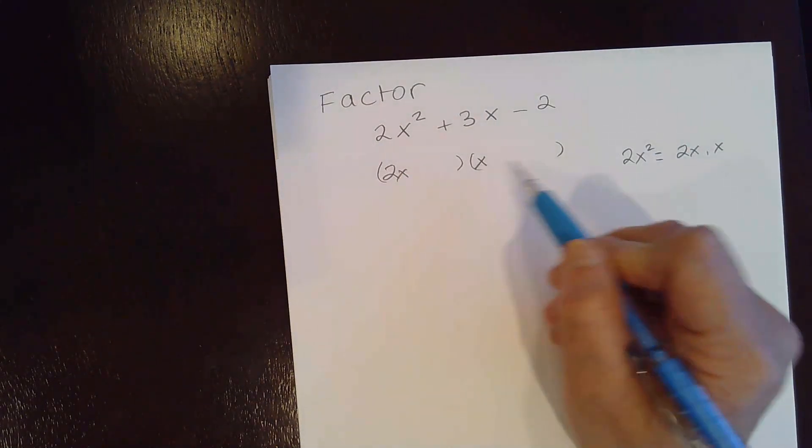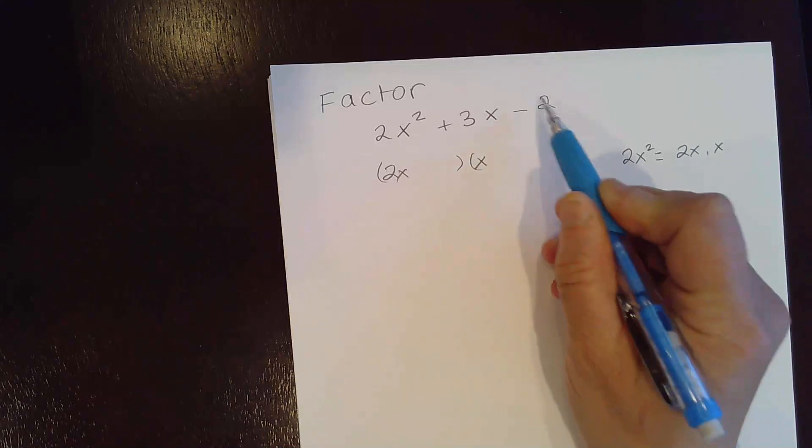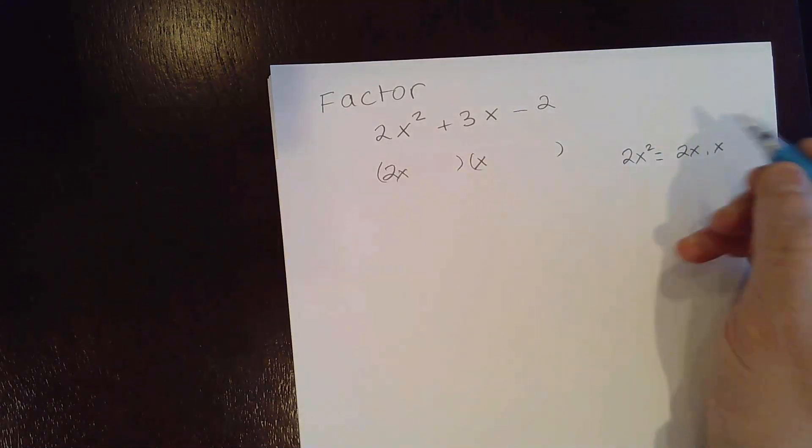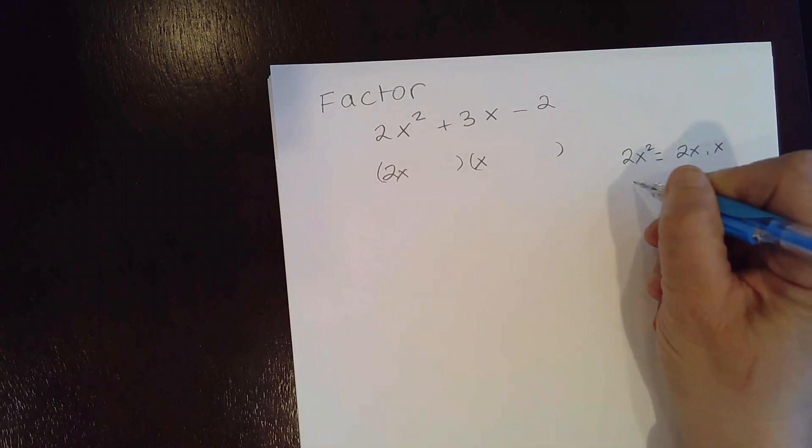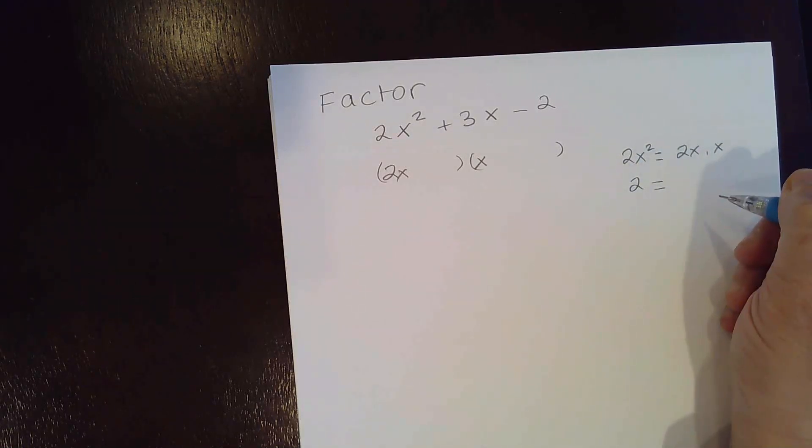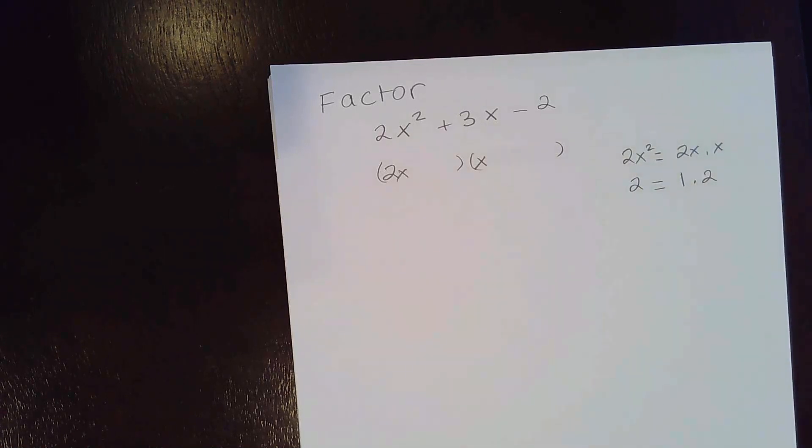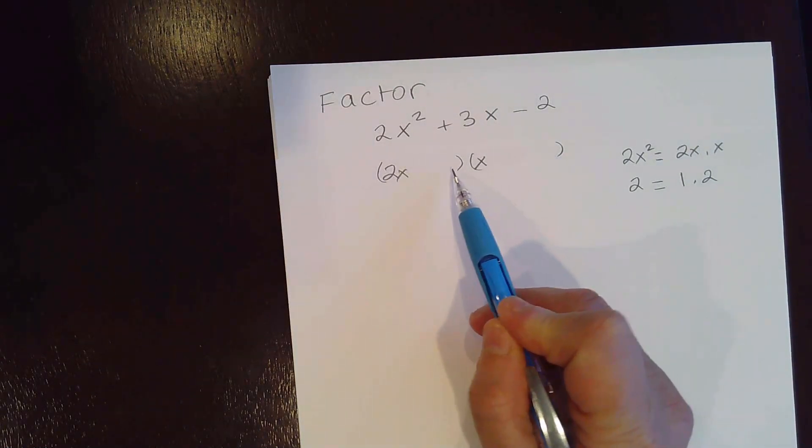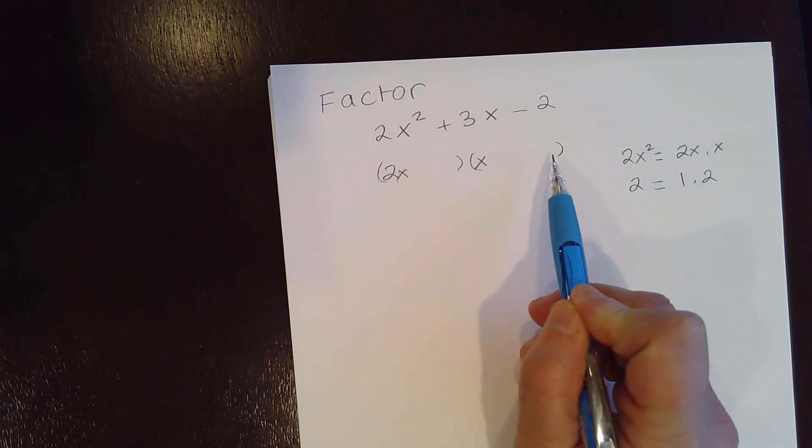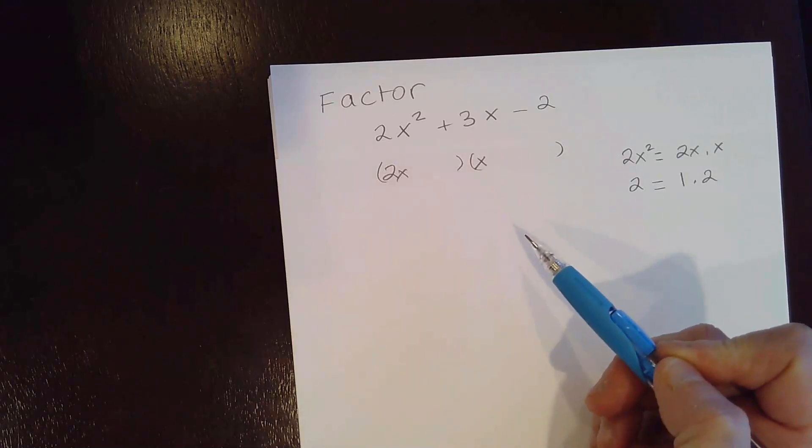Now we need to have two numbers whose product is negative 2. So let's start with 2 first. We'll talk about the sign a little bit later on. The only possible way we can get 2 is by multiplying 1 times 2 or 2 times 1. So here we're going to have either 1 here or 1 here or 2 here or 2 here. How do we decide?